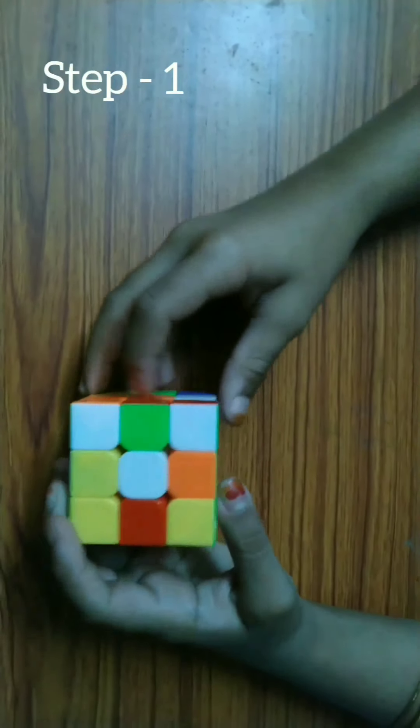Hi friends, today I am going to show you how to solve 3 by 3 Rubik's Cube step by step. We need to begin with the white face.